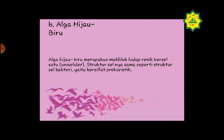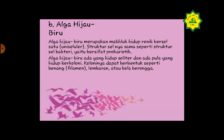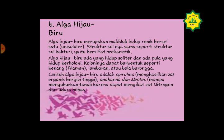Alga hijau biru merupakan makhluk hidup renik bersel satu dengan struktur sel yang bersifat prokaryotik, sama seperti bakteri. Alga hijau biru ada yang hidup soliter dan ada pula yang hidup berkoloni; koloninya dapat berbentuk seperti benang (filamen), lembaran, atau bola berongga. Contohnya adalah Spirulina yang menghasilkan zat organik bergizi tinggi, serta Anabaena dan Nostoc yang mampu menyuburkan tanah karena dapat mengikat zat nitrogen dari udara bebas. Oleh karena itu alga hijau biru disebut sebagai organisme autotrop yang menguntungkan bagi manusia.